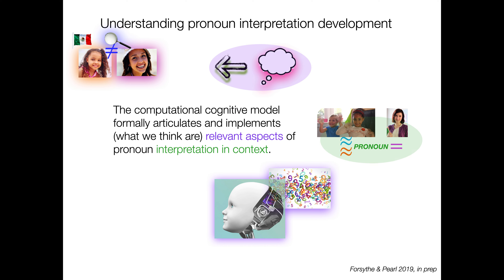The computational cognitive model is going to formally articulate and implement what we think are the relevant aspects of pronoun interpretation in context. The whole point with modeling is that we as the modelers are choosing what this process looks like — making choices about what we think the relevant aspects are of pronoun interpretation and context.